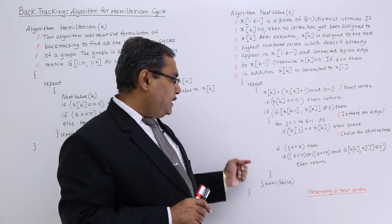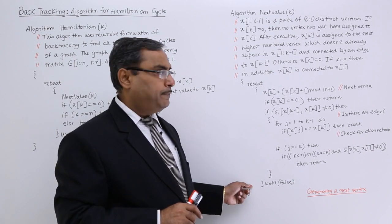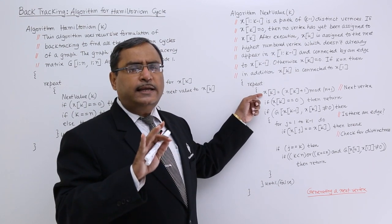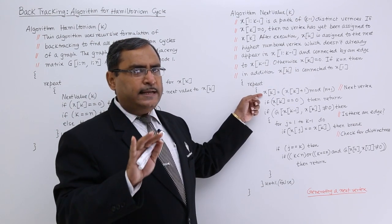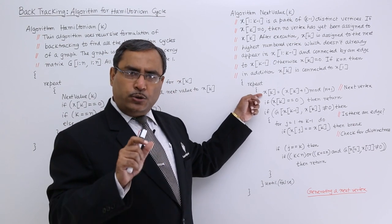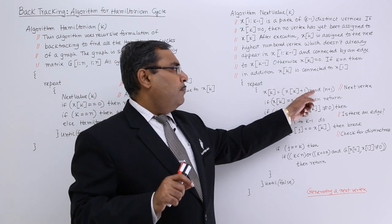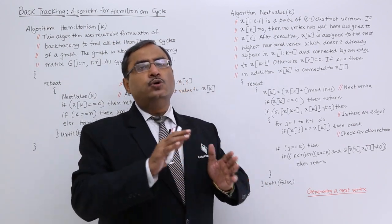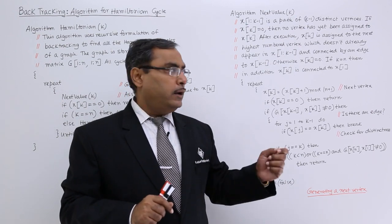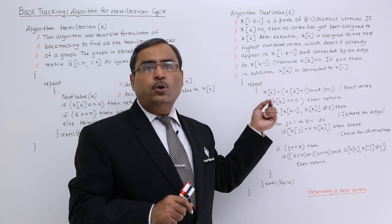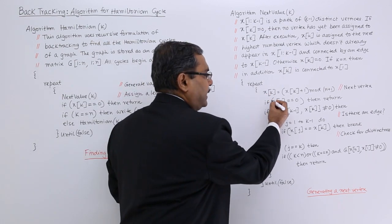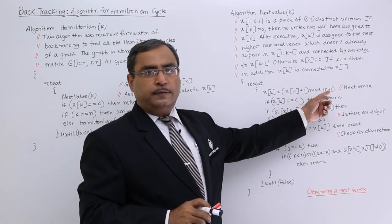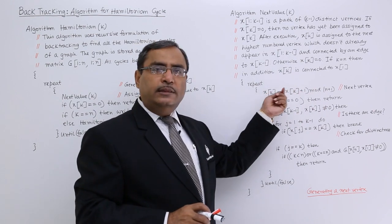The algorithm uses a repeat-until-false infinite loop. x[k] = (x[k] + 1) mod (n + 1). For example, with n=8: initially x[k]=0, so (0+1) mod 9 = 1, making node 1 the first choice. If node 1 is not suitable, we try (1+1) mod 9 = 2, then 3, then 4, and so on. If we've already tried node 8, then (8+1) mod 9 = 0, meaning x[k] becomes 0 — all nodes have been tried but none found suitable.